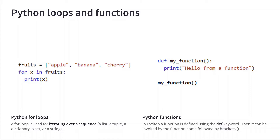In the example, I have a list of fruits defined with square brackets. The for loop says 'for x in fruits:' followed by an indented 'print x.' The variable x temporarily takes each value in sequence — first apple, then banana, then cherry. The print line is indented because it's inside the loop's code block, so running that code writes three lines: apple, banana, and cherry.